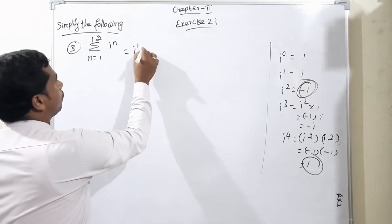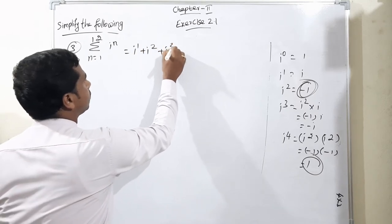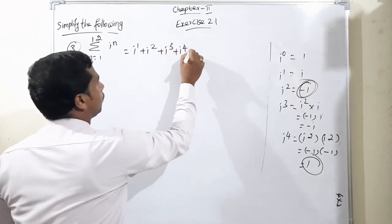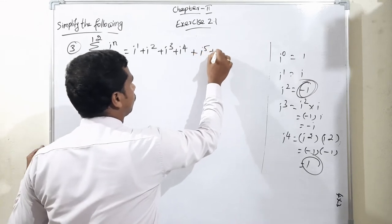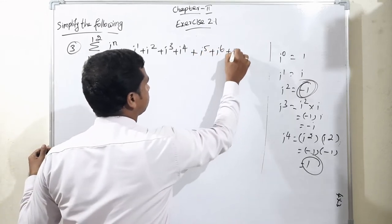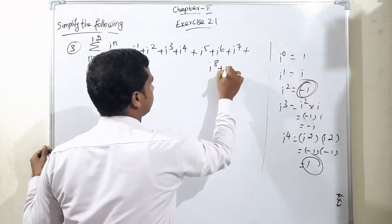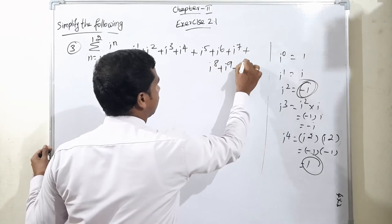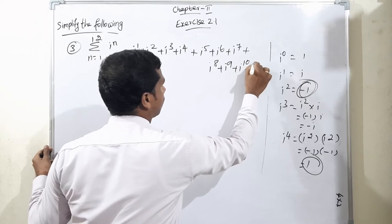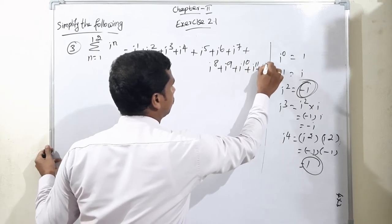This is equal to i to the power 1 plus i to the power 2 plus i to the power 3 plus i to the power 4 plus i to the power 5 plus i to the power 6 plus i to the power 7 plus i to the power 8 plus i to the power 9 plus i to the power 10 plus i to the power 11 plus i to the power 12.